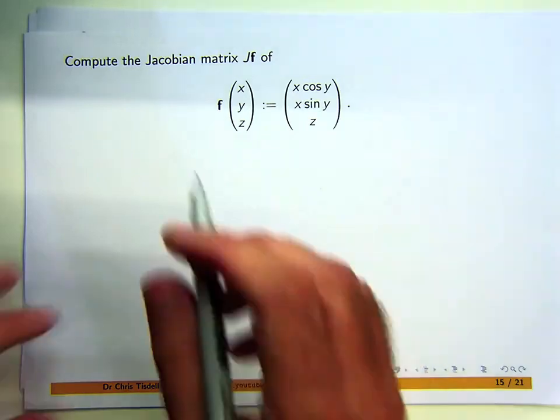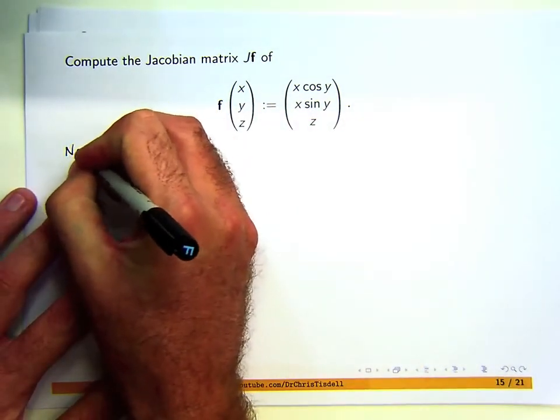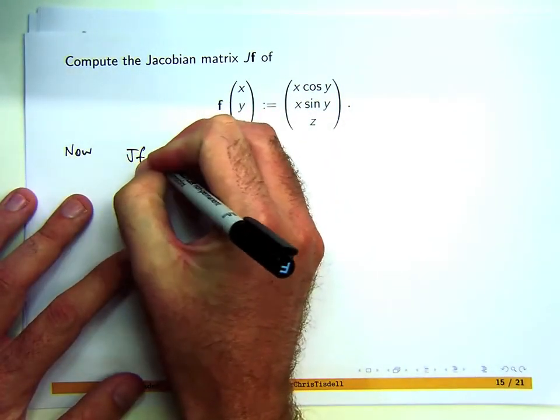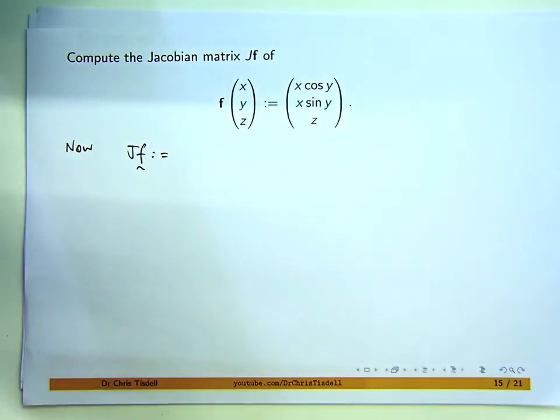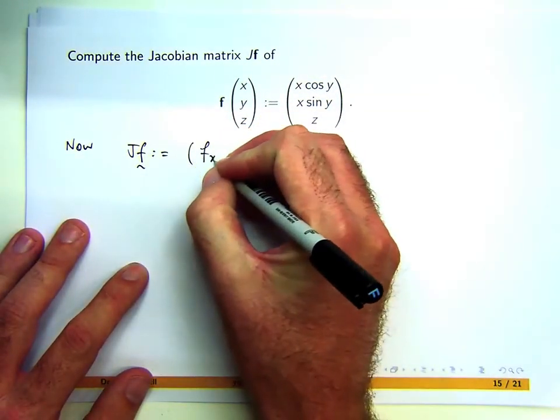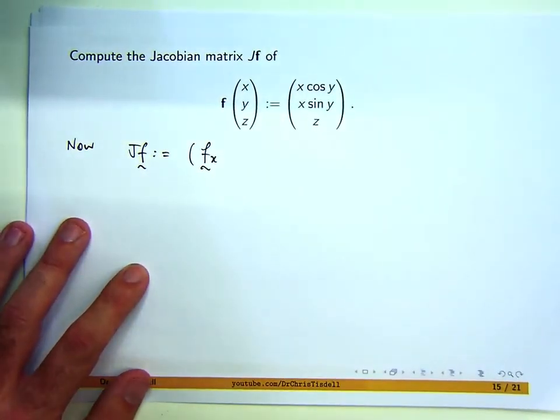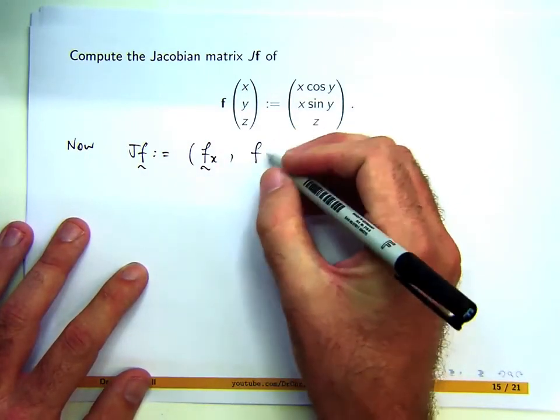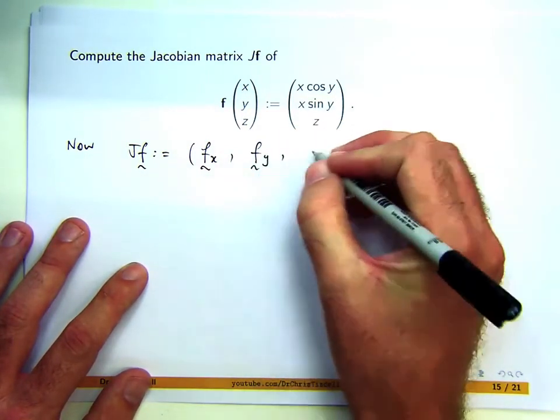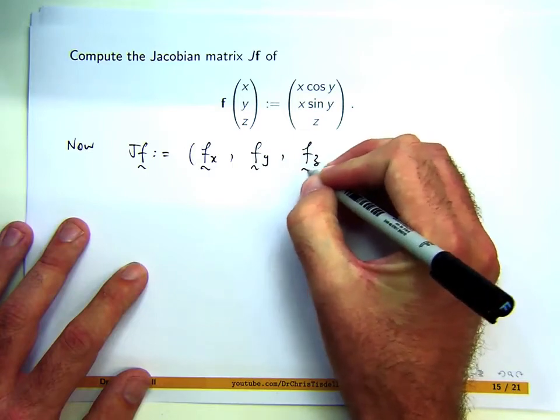Let's define what we mean by the Jacobian matrix. You can use different kinds of notation. What I'm going to do is write the partial derivatives of the vector function f as columns. Let me show you what I mean. I'm going to put these commas in here just to separate the columns.